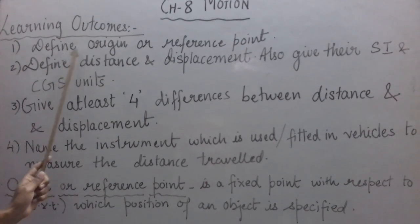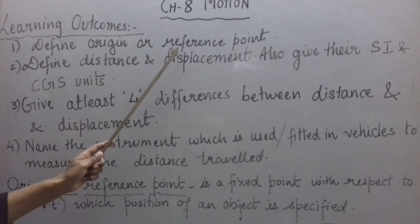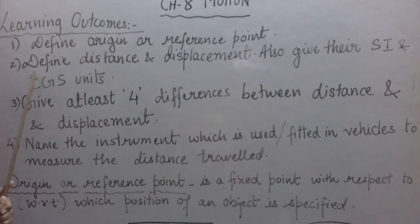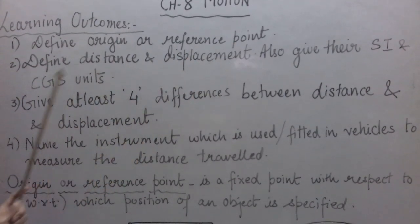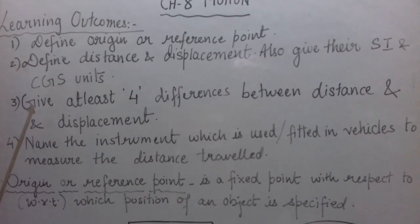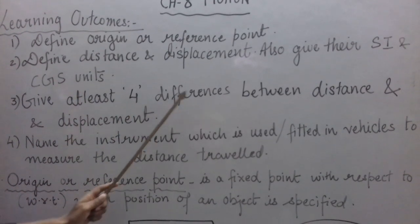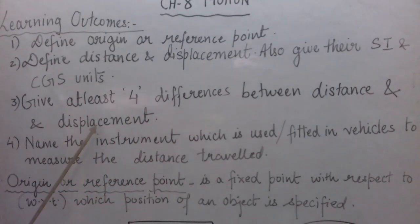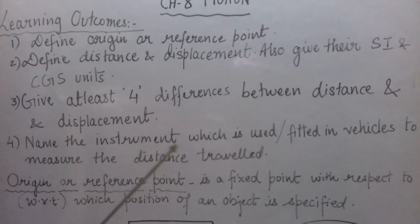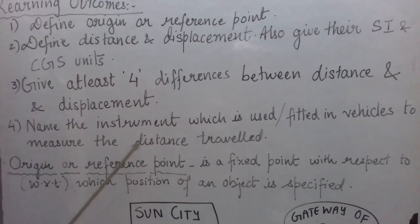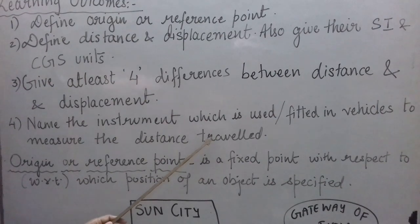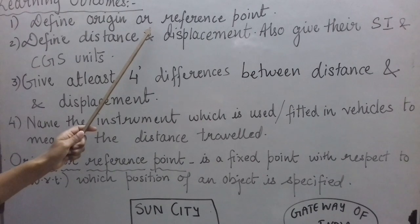First is define origin or reference point. Second, define distance and displacement and also give their SI and CGS units. Third, give at least four differences between distance and displacement. And the last one is name the instrument which is fitted in vehicles to measure the distance travelled by the vehicle. Now let us see our first learning outcome: define origin or reference point.